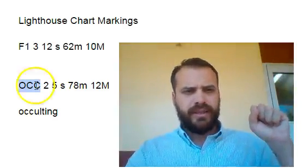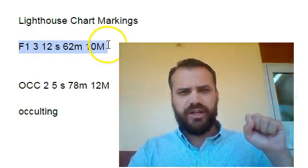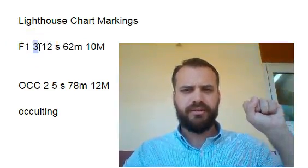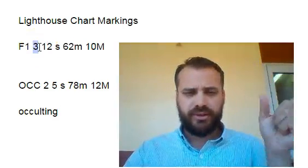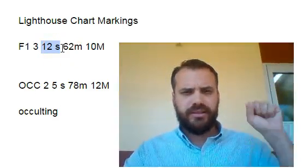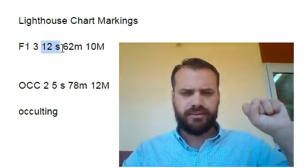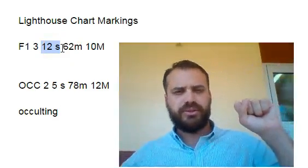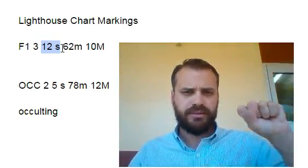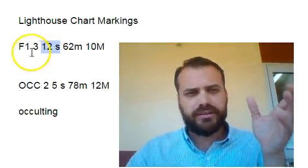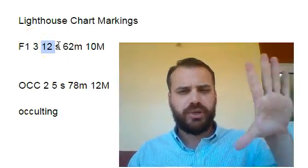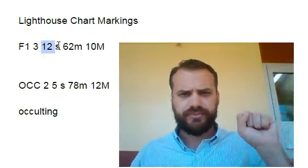Looking at this first lighthouse, it's going to flash three times — bing, bing, bing — three flashes. And then here's the second part: it's going to wait 12 seconds of complete darkness, and then it's going to go again. So be careful there — it flashes three times and then it waits 12 seconds. Some people get confused and think it means 12 seconds between each flash. It doesn't mean that. It means three short flashes and then wait 12 seconds.